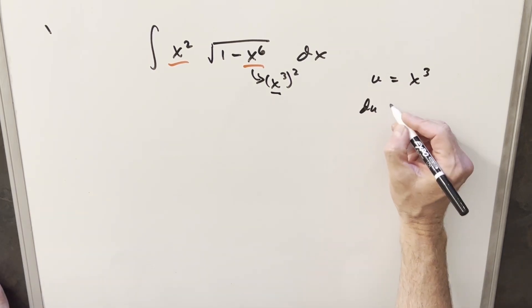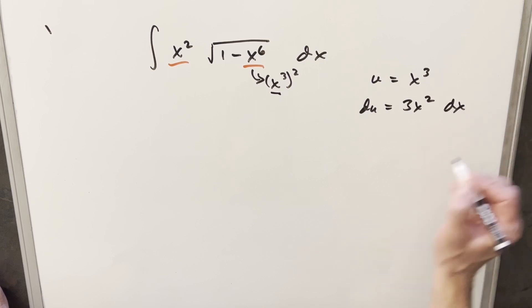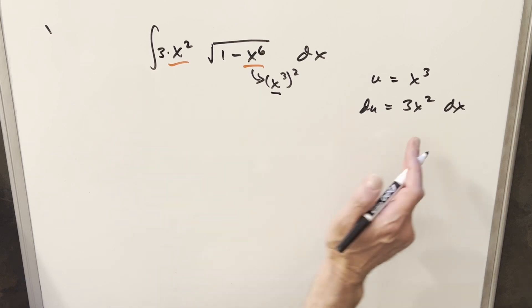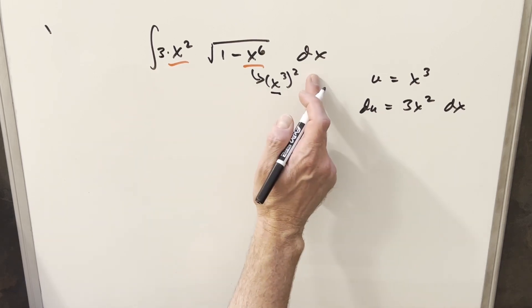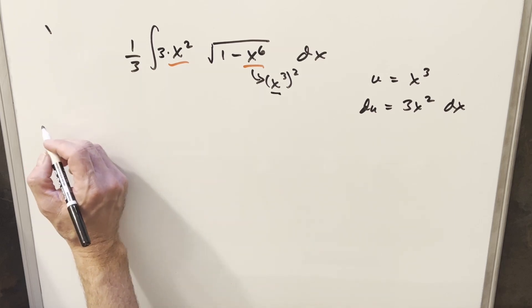Then I'll take a derivative to get our du values. This is going to give me 3x squared dx. And what I can do here is I'll just multiply my x squared times a 3. In order to match what we have here, we'll have our 3x squared times dx. I'll multiply it by 1 third up front just so I'm not changing it.